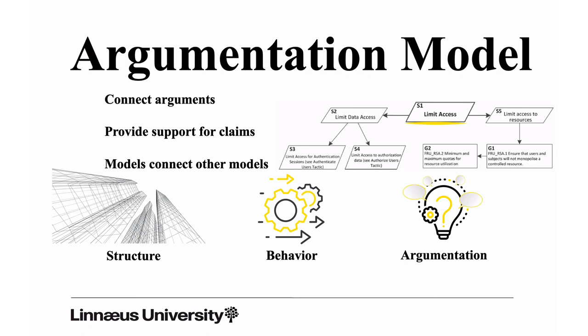We can argue that for authorization, yes, we use this single sign-on mechanism, we have this type of encryption. So we can combine the argumentation statements with references to models, to structure, behavior, but also to other argumentation models. We can have analytical models, we can have simulation models, we can have verification, validation - that is, results from tests. So it's more or less anything that can be used as an argument to convince a stakeholder that the decisions we plan to make or have made are sufficient to meet an architectural requirement.